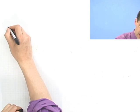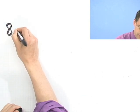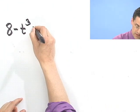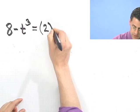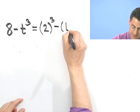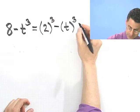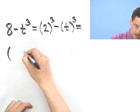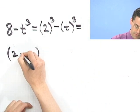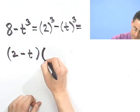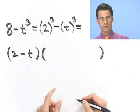Let's take a look at 8 minus t cubed. Notice that really is the difference of two perfect cubes because 8 is a perfect cube. It's 2 cubed minus t cubed. Now I can use the formula. I know there's going to be a factor that's going to look like 2 minus t. Then the other factor is going to look like what?